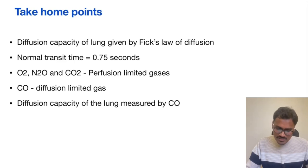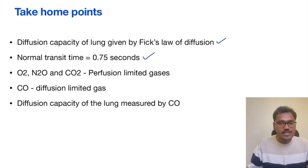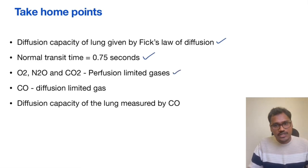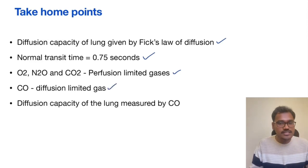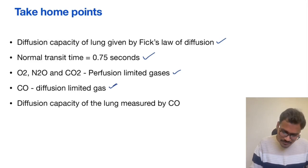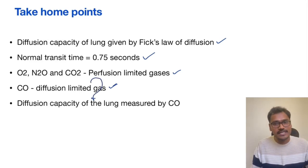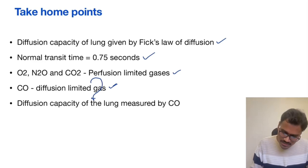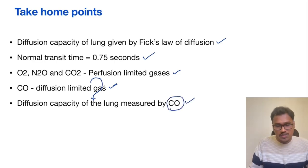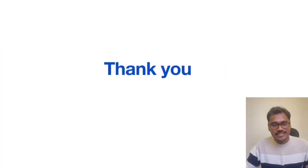Take-home points: Diffusion capacity of the lung is given by Fick's law of diffusion. Normal transit time is 0.75 seconds. Oxygen, nitrous oxide, and carbon dioxide are perfusion-limited gases. Carbon monoxide is a diffusion-limited gas, and this property is used to measure diffusion capacity of the lung clinically. In the next video, we will discuss the transport of oxygen and the oxygen-hemoglobin dissociation curve.